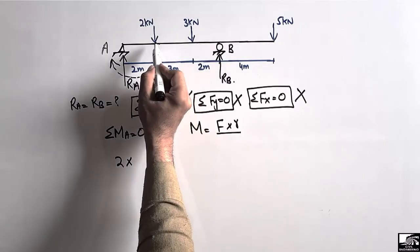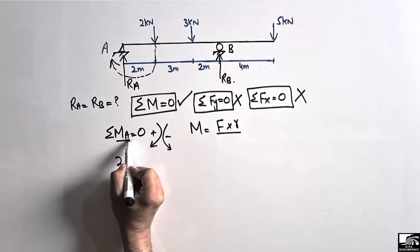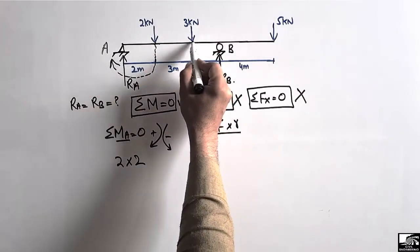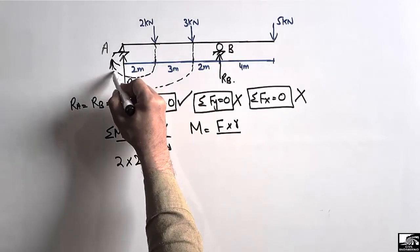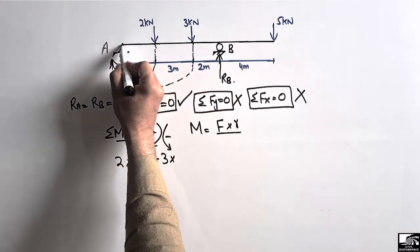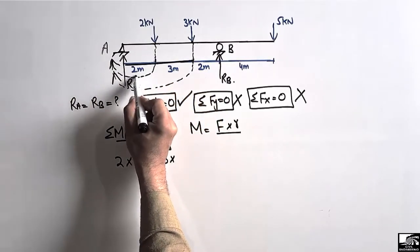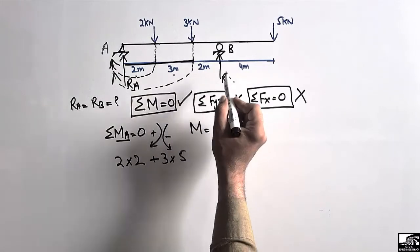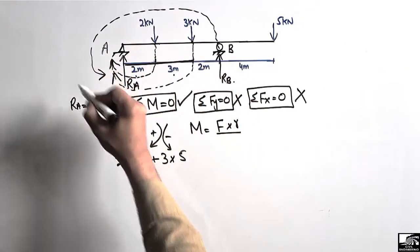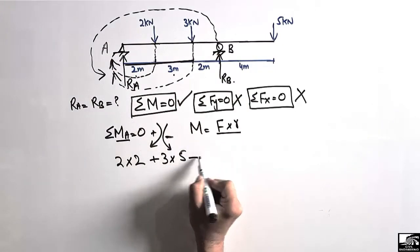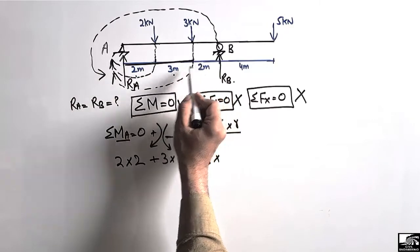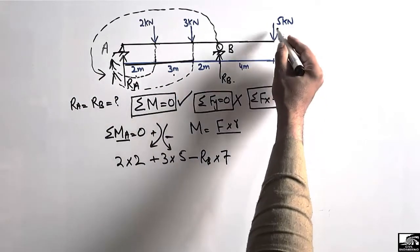The moment due to 2 kN is 2 multiplied by 2 meters (its distance from point A). The 3 kN load also acts downward, creating a clockwise moment about point A, so it is also positive: 3 multiplied by 5 meters. RB acts upward, creating an anti-clockwise moment about point A, so it is negative: minus RB multiplied by 7 meters (which is 2 + 3 + 2).